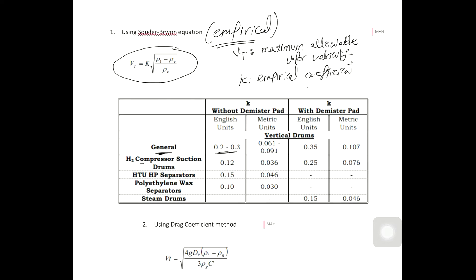If this vertical separator is used on the suction of a compressor, you will be more conservative. Especially for the suction of compressors or any expensive equipment in the plant, you should go to computational fluid dynamics to test your design. But normally, in general surface service, you don't need CFD to test your design. We will normally take K as a general surface value.